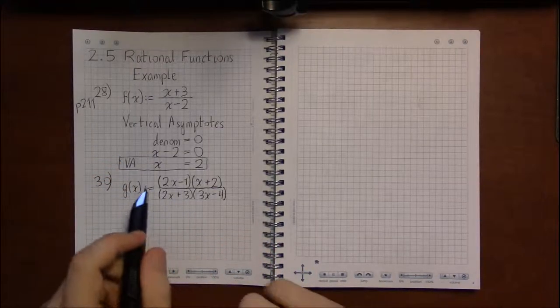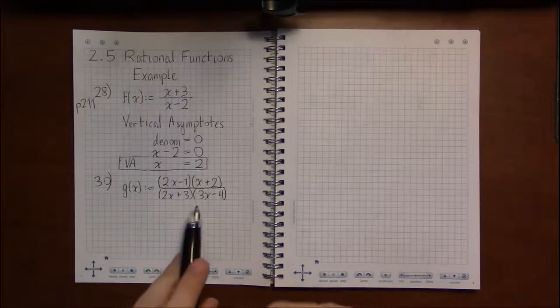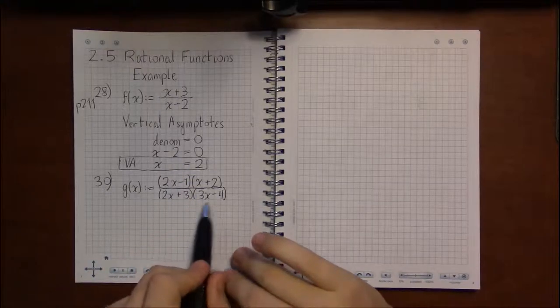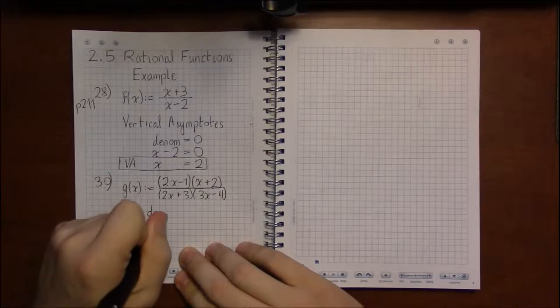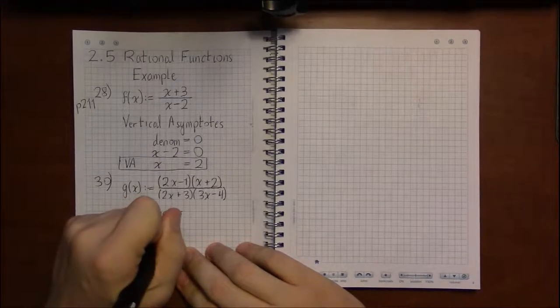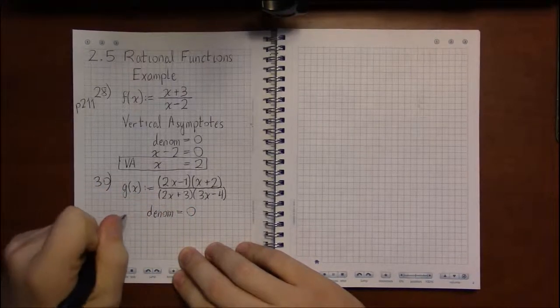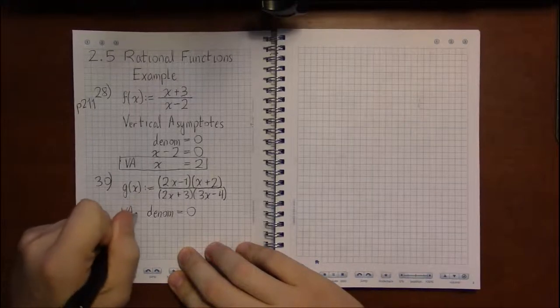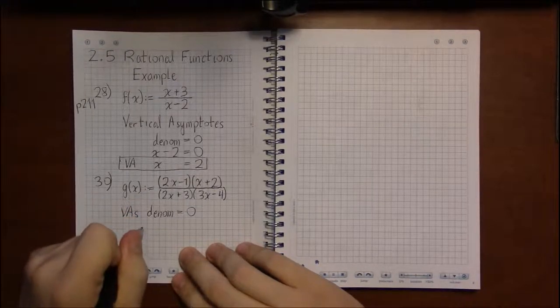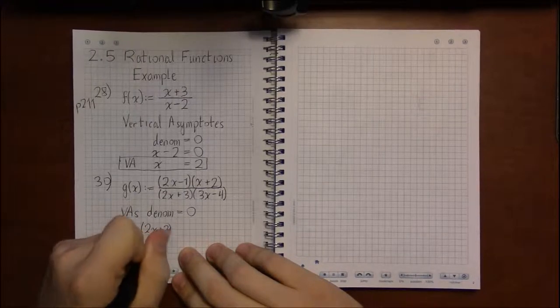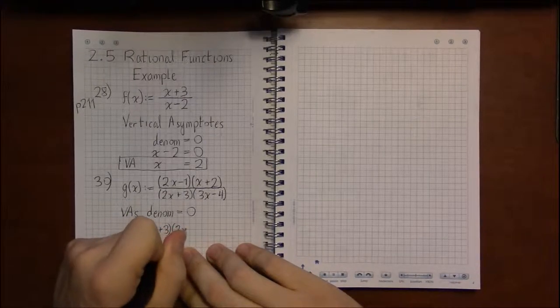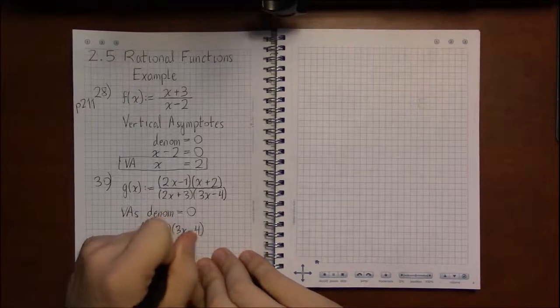If we're looking for vertical asymptotes, which we are, then we're going to set the denominator equal to zero. That's going to tell us exactly what the vertical asymptotes are. So we're going to set 2x plus 3 times 3x minus 4 equal to zero.